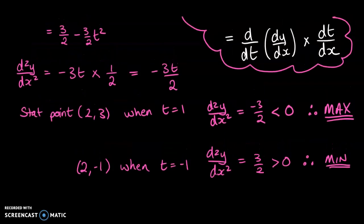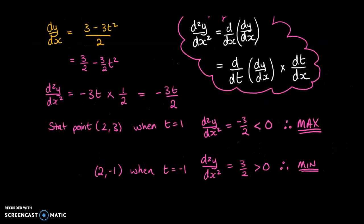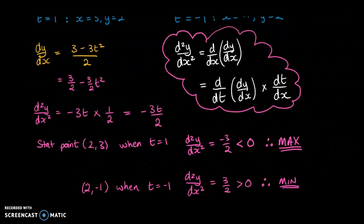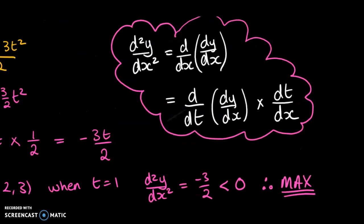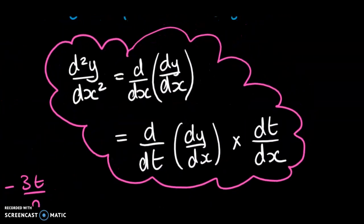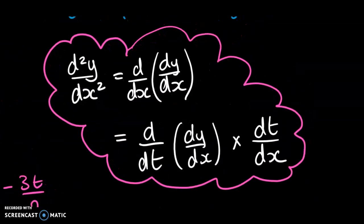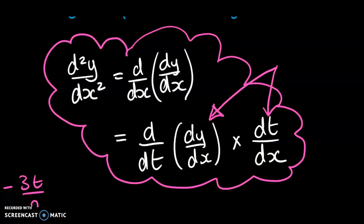And that's finding the second derivative for parametric equations. This key step here is the important bit to focus on and write down: differentiate your first derivative with respect to t and then multiply it by dt/dx.